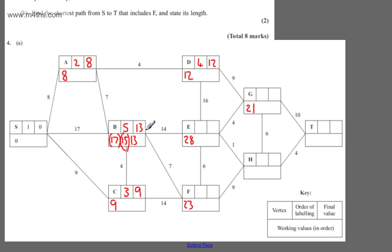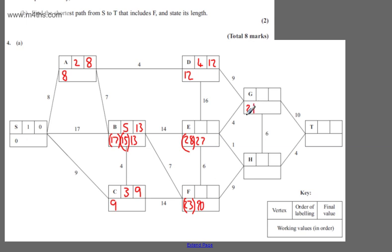Now I want all of the unconnected vertices directly connectable from B. E is one of them: 13 plus 14 beats 28 and gives me 27. We've got 13 plus 7 beats 23, and that gives me 20. We must put these in and we must show them — don't be tempted to skip them. So we have 20, 27, 21. The lowest weight is 20, so this becomes order 6 with a final value of 20.